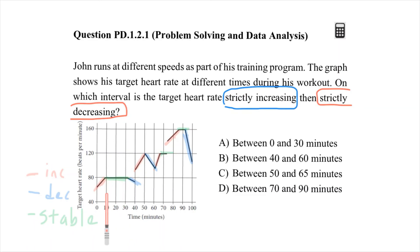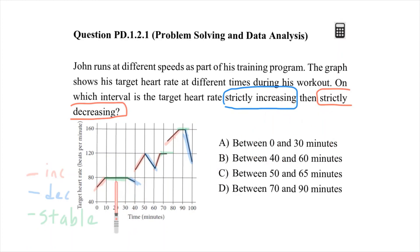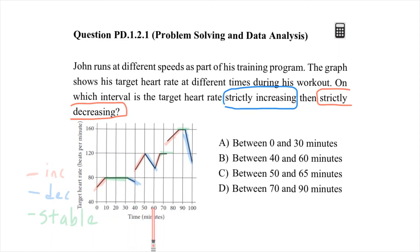Looking at the intervals: one section is increasing for about 10 minutes, then stays stable for 20 minutes, then decreasing — but I need increasing then directly decreasing. Another interval goes: increasing, stable, increasing, stable, then decreasing. The interval from 40 minutes to 60 minutes shows strictly increasing then strictly decreasing. So the correct answer for this question is B. Thank you, have a great day!